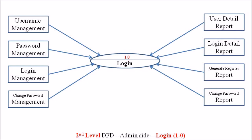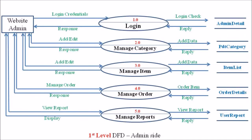The second process on the admin side is manage category, labeled 2.0. We have to elaborate and expand the different sub-processes available within this manage category process.